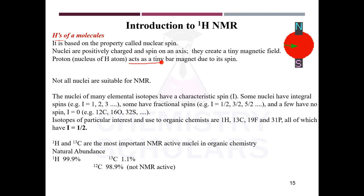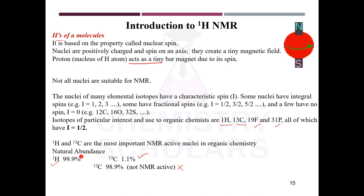Not all nuclei are suitable for NMR. NMR active nuclei include hydrogen (H1) and carbon-13. The two isotopes of carbon are C12 and C13; C13 is NMR active while C12 is not. We can also use F19 and P31. These nuclei have a spin of 1/2 which makes them NMR active. In proton NMR, it is H1 which is NMR active.